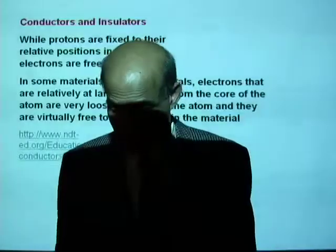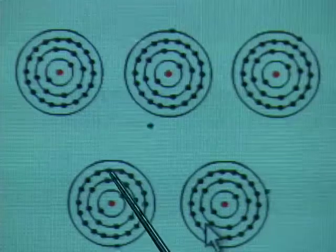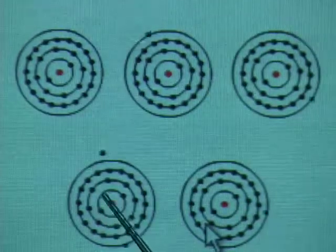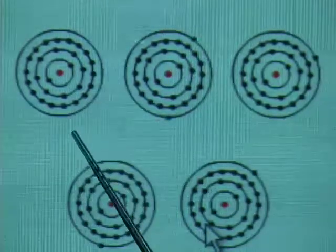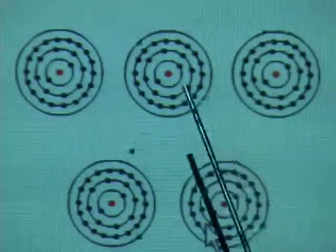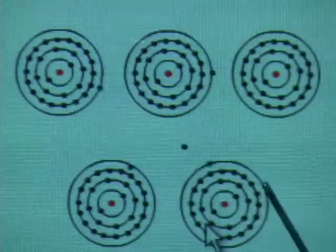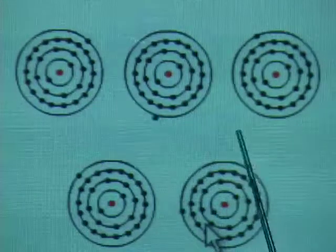Here is an animation that shows how electrons in the outer orbits — electrons relatively far from the center of each atom — behave. They are virtually free and you can see they move about, moving from one atom to another. Those electrons really do not belong to any particular atom; they can be called drifters. There are a large number of these drifters in a conductor.